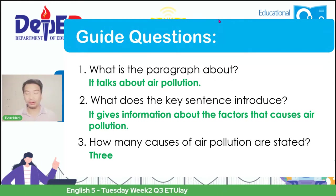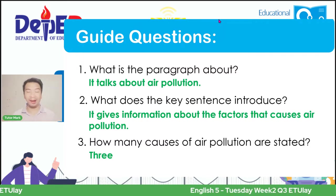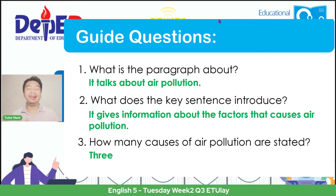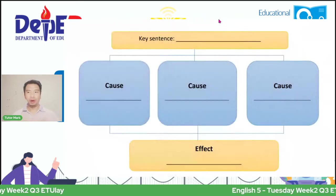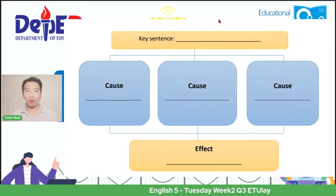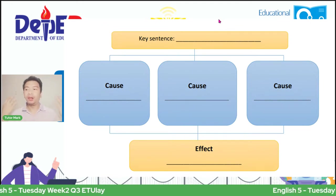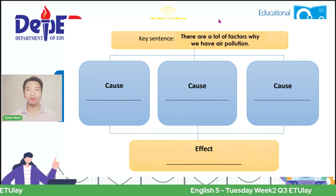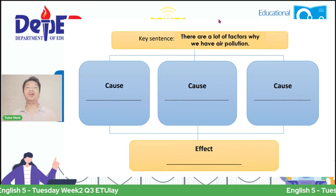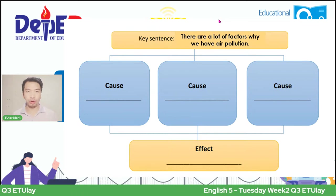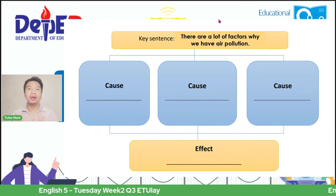All of these questions are also the same questions found in your self-learning module. You can copy the answers to help you understand how to build a summary. Now, let's move on to creating a summary by having our graphic organizer. What is the key sentence all about? The paragraph tells us about air pollution, so the answer you can write in your module is: 'There are a lot of factors why we have air pollution.' That is the key sentence. And below it are your causes.